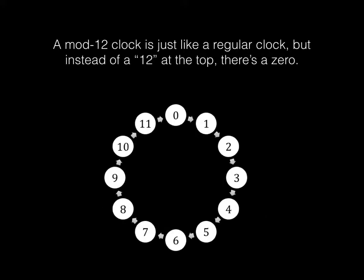The mod 12 clock is just like a regular clock, but instead of 12 at the top, we put a zero at the top. So there's 1 o'clock, 2 o'clock, 3 o'clock, 10 o'clock, 11 o'clock, but zero o'clock.